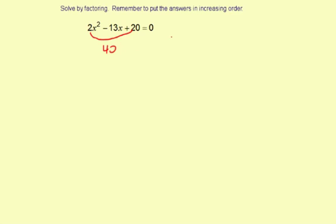So possible factors of negative 40. There's negative 1 and negative 40. Negative 2 and negative 20. Negative 4 and then negative 10. Negative 5, negative 8. That one works because negative 5 plus negative 8 is negative 13.